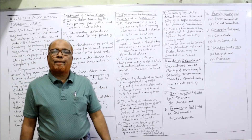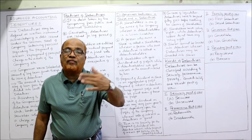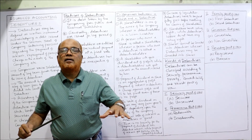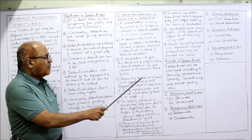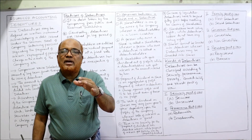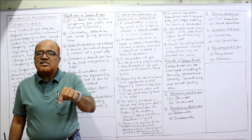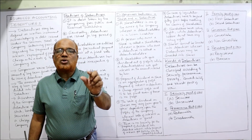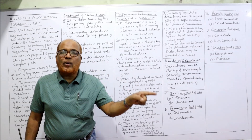A shareholder gets dividend out of the profits of the company, whereas a debenture holder gets interest, not dividend. Payment of dividend on shares is an appropriation of profit — dividend is paid from profit. But when interest is paid on debentures, it is not an appropriation; it is a charge on the profit. So interest on debentures is a charge on profit, whereas dividend on equity is an appropriation of profit.